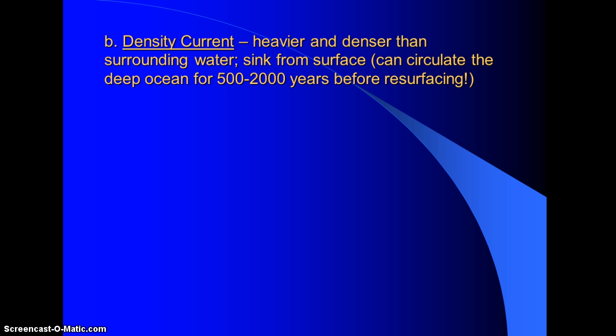It's called the global conveyor belt, and a density current is going to be the deep ocean part of that. That circulation is much slower than the surface — it takes 500 to 2,000 years before it will resurface. Very slow motion, but it's connecting all of the oceans together. The surface currents weren't connecting all the oceans, but with the bigger system that includes the density currents, it's all connected.